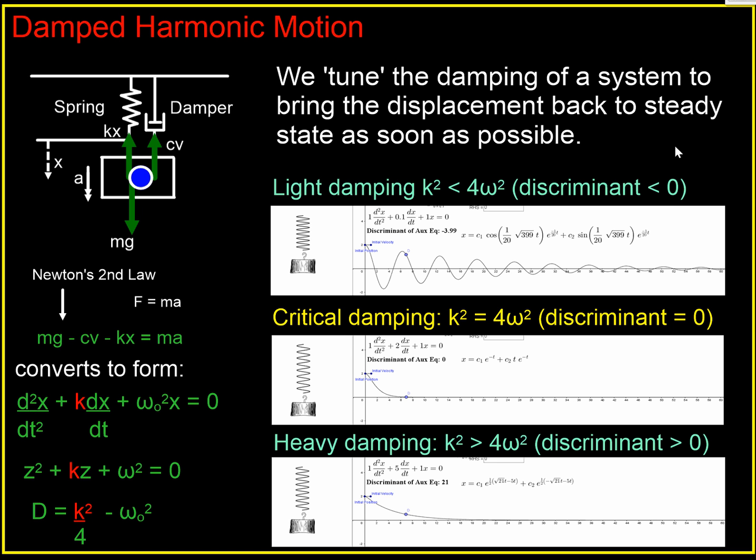If we've got a damped system like this, we get a second order differential equation. We really want to get to critical damping. That's the diagram in the middle where K² equals 4ω², discriminant 0. If we put less damping in, it's going to vibrate. That's the top one. And if we put heavy damping in, it's going to be very slow to get back to 0. So there you have it. I hope that's useful.